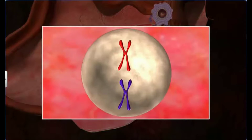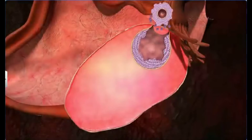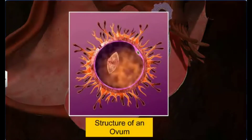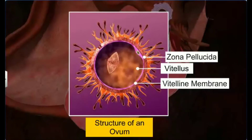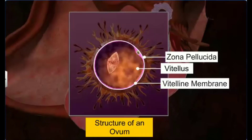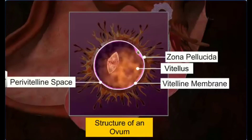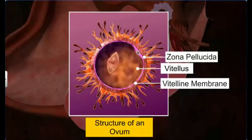Upon its release, the ovum begins to undergo the second meiotic division, however the division does not go beyond the first phase. Interestingly, the ovum contains only the X chromosome. The ovum is filled with cytoplasm called the yolk or vitellus, surrounded by a membrane called the vitelline membrane. The vitelline membrane is enclosed in another membrane called the zona pellucida, and the space between them is called the perivitelline space. Surrounding the zona pellucida is a layer of granulosa cells called the corona radiata.